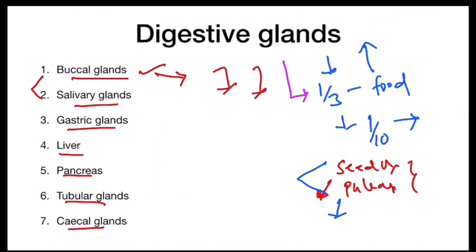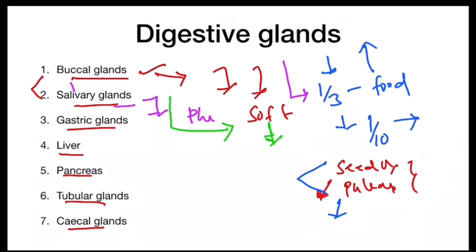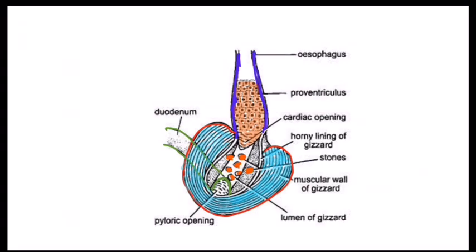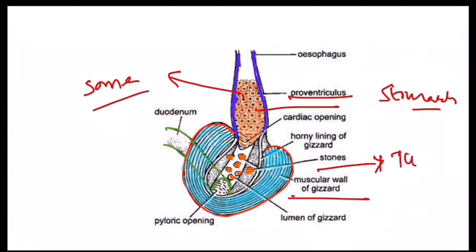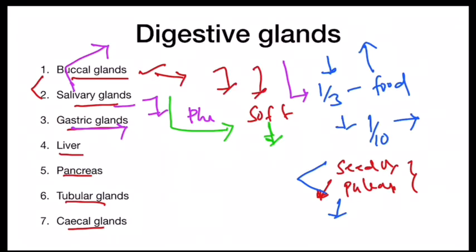The salivary glands are present in the pharynx region. The saliva makes seeds and pulses further soft; it is said to contain enzymes, though this is not completely proved. The gastric glands are present in the stomach region — the proventriculus. These gastric glands are large enough to be visible, and their secretions contain peptic enzymes. The gizzard also has tubular glands that secrete digestive juices, possibly containing digestive enzymes.